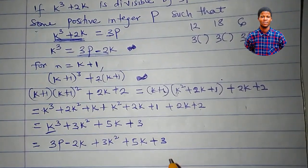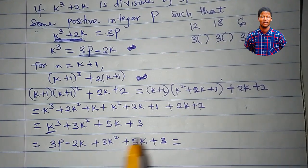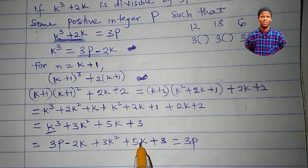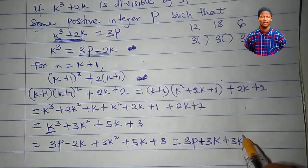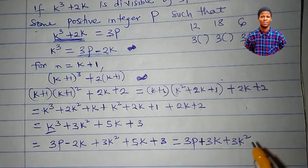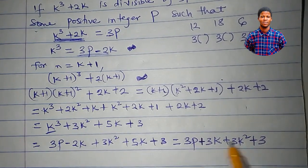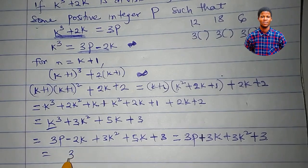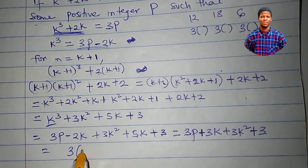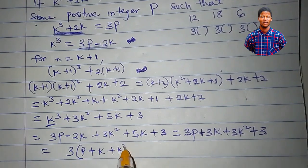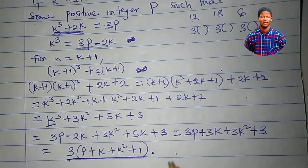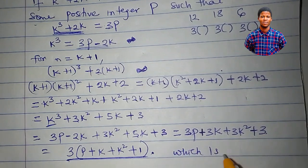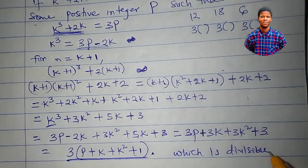Simplifying: 3p minus 2k plus 5k is 3k, giving us 3p plus 3k squared plus 3k plus 3. Since 3 is common to every term, we can factor out 3: 3 times (p plus k squared plus k plus 1). This shows the expression is divisible by 3. This is the end of the proof.